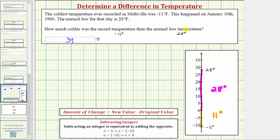Another way to answer this question would be to use our formula for the amount of change, where the amount of change between two values is equal to the new value minus the original value. And because we want to determine how much colder the record temperature is than the normal temperature, the record temperature would be the new value, and the original value would be the normal low.